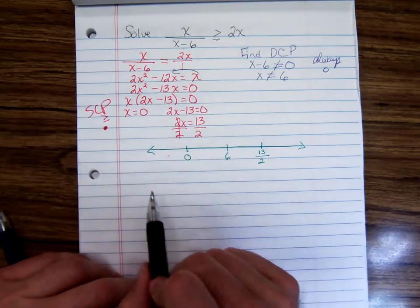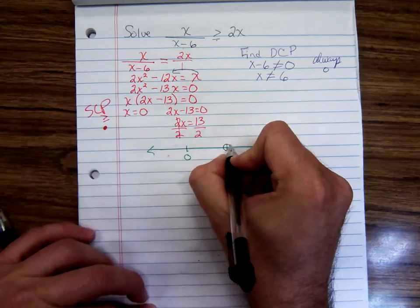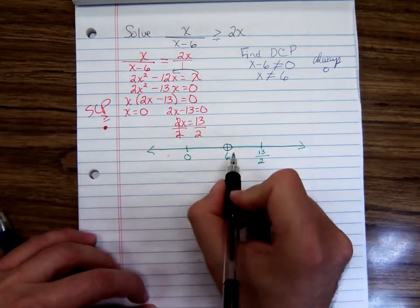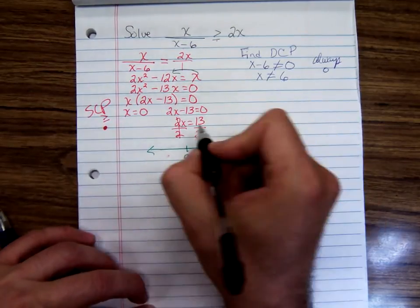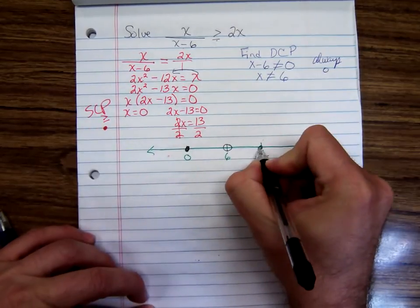Make sure you put these numbers in numerical order on the number line, because you're going to sure get the wrong answer. So open circle on the 6, closed circle, and closed circle.